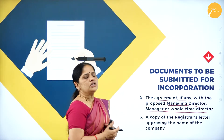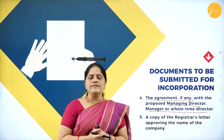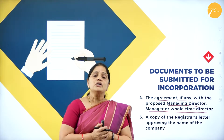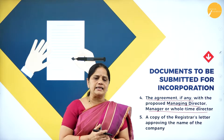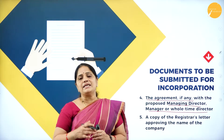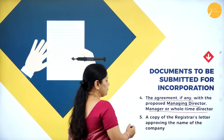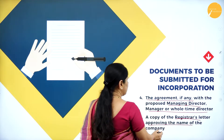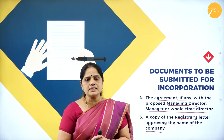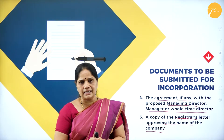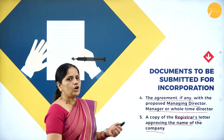The next document is the agreement, if any, with the proposed managing director, manager, or whole time director. There should be an agreement between the promoter and the managing director, which becomes an important document to be submitted for incorporation. Next, a copy of the registrar's letter approving the name of the company must be submitted. The name approval given by the registrar should be submitted along with the other important documents for incorporation.